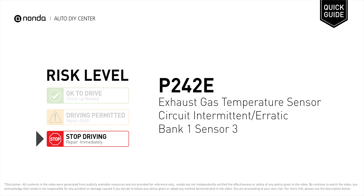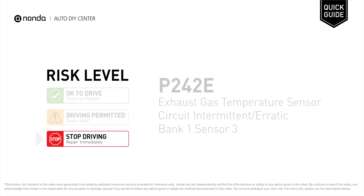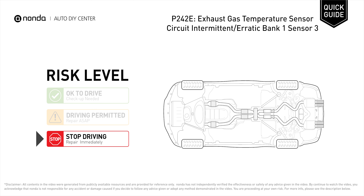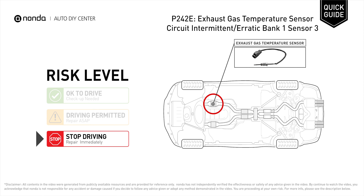P242E is a diagnostic trouble code for exhaust gas temperature sensor circuit intermittent or erratic, bank 1 sensor 3. Under this circumstance, stop driving and repair your vehicle immediately. It indicates the sensor signal voltage return is intermittent within specification.